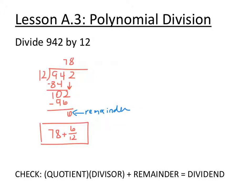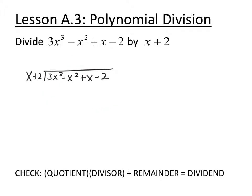So we write 942 divided by 12 is 78 plus 6 over 12, or a remainder of 6. We do polynomial division very similar to regular long division. The dividend goes inside the house, the divisor goes outside the house. Then we want to focus on the first term — what do we have to multiply the first term by? Make sure everything is written in standard form to get our 3x cubed.